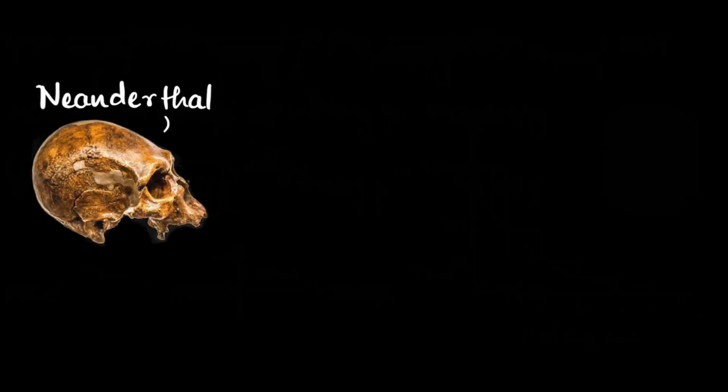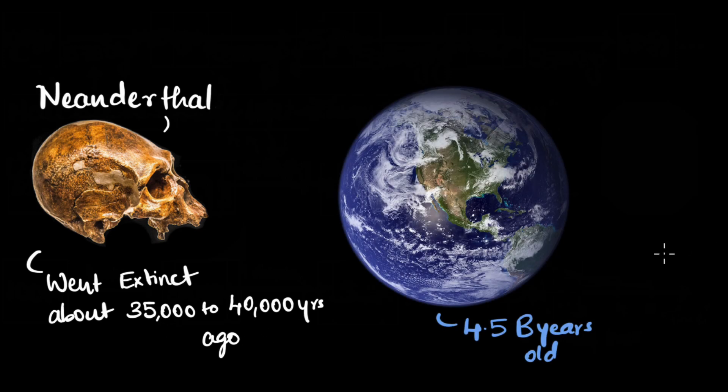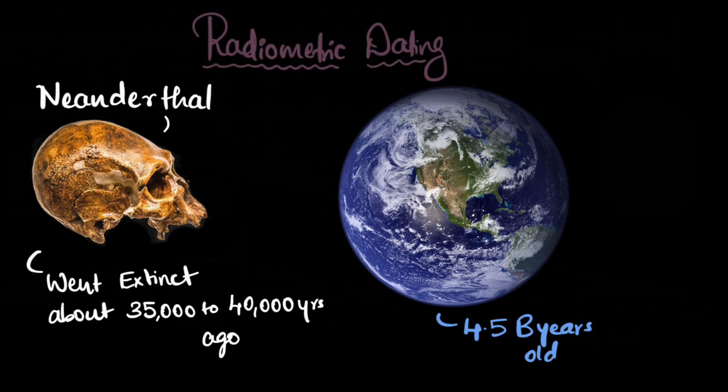This is a Neanderthal skull. Neanderthals are extinct species of humans, and we believe they went extinct about 35 to 40,000 years ago. And this is Earth, and we believe Earth to be about four and a half billion years old. But my question was always: how do we know these things? How do we figure these things out? Turns out one common method is radiometric dating, where we make use of radioisotopes to figure this out. But how does that work? How do you use radioactivity to figure out how old something is? Let's find out.